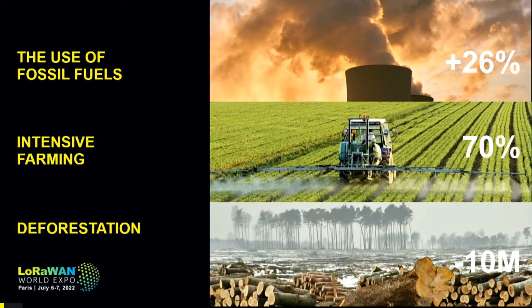Third is deforestation and desertification. Every year, we lose 10 million hectares of forest. Just to have an idea, that's three times Switzerland, where we at Laureate have our headquarters. It's getting better because 20 years ago it was 16 million, but still a lot. And this means that many animals lose their habitats as well.